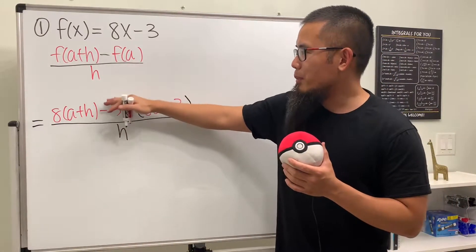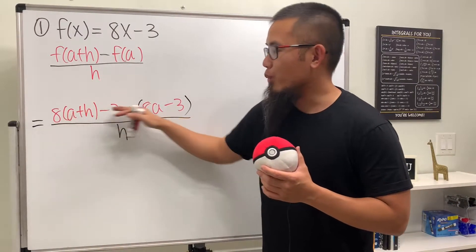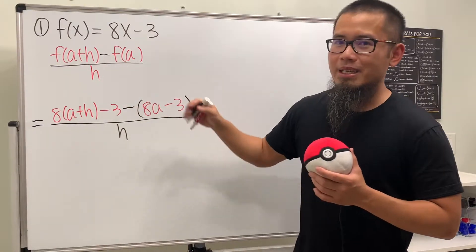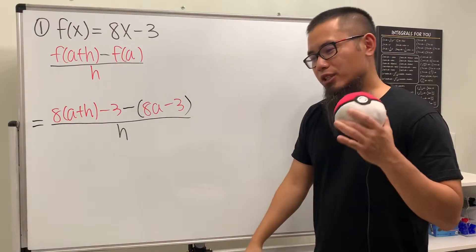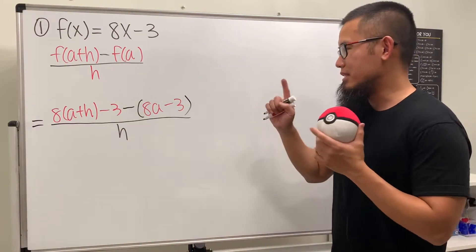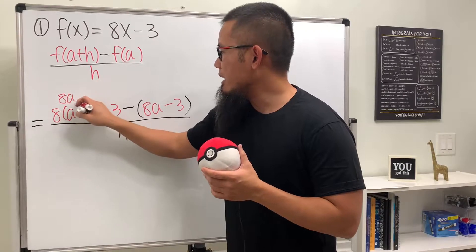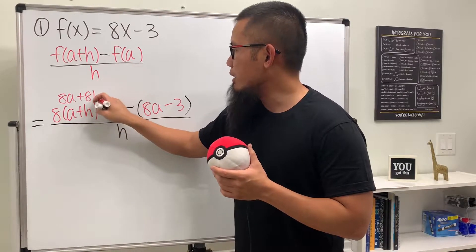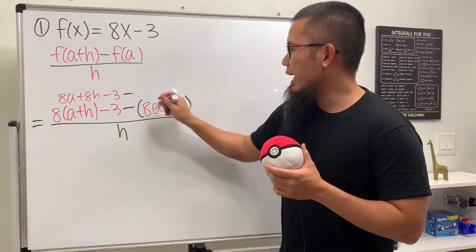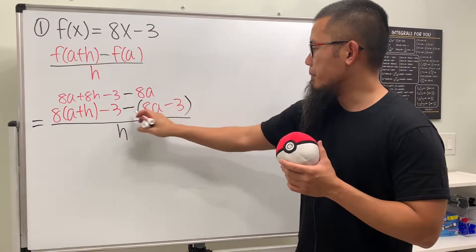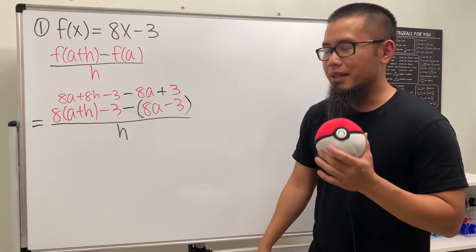I purposely left space here — I recommend doing the work and putting the results above it. Just be organized; that's the key to being successful with these kinds of questions. Distributing, we get 8a + 8h - 3, and then distributing the negative we have -8a + 3.